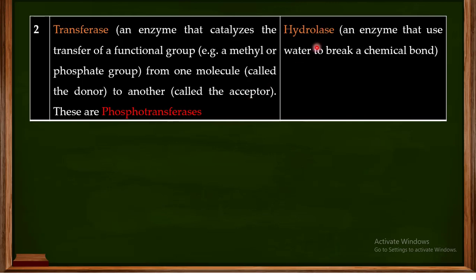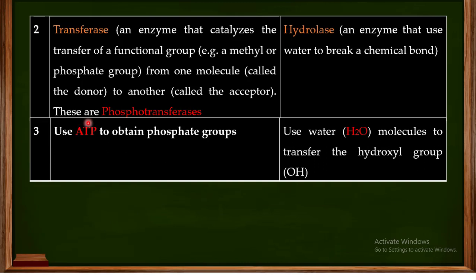Phosphatases belong to the class of enzymes known as hydrolases, which use water to break a chemical bond — in this case, to remove the phosphate group. For kinases, the donor is ATP (adenosine triphosphate), which donates a phosphate group, and the acceptor is the protein or molecule receiving the phosphate. Hydrolases use water molecules to transfer a hydroxyl group, and the end result is that the phosphate group is removed from those proteins or molecules.